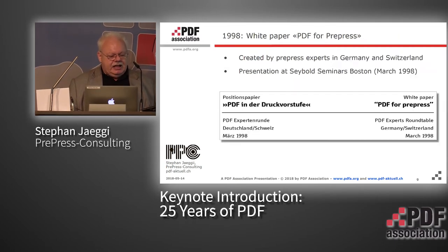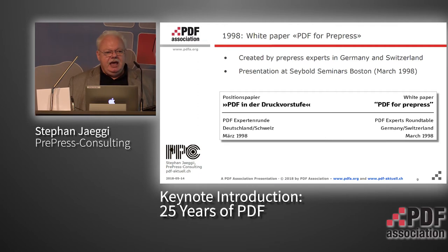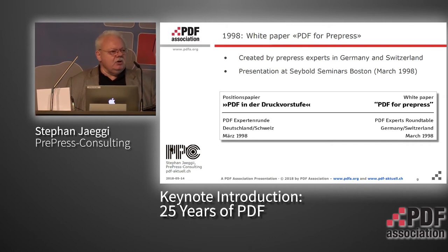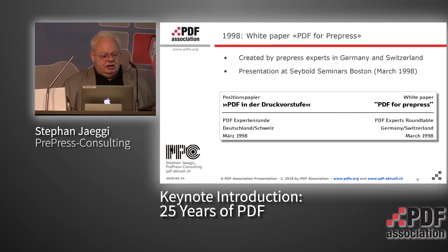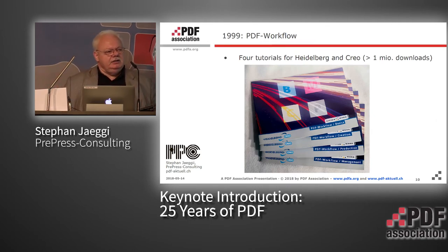There were still things which were not possible, and that led to an initiative from Olaf Drimmer from Callas. He invited a group of pre-press experts from Germany and Switzerland to a PDF round table, and we decided to create a white paper listing all the issues, missing things, and broken things in a PDF workflow for print production. Olaf and I had the opportunity to present this white paper at the Seybold Seminars in Boston in March 1998 — 20 years ago. It got quite good feedback, and Adobe took care of a lot of the issues.